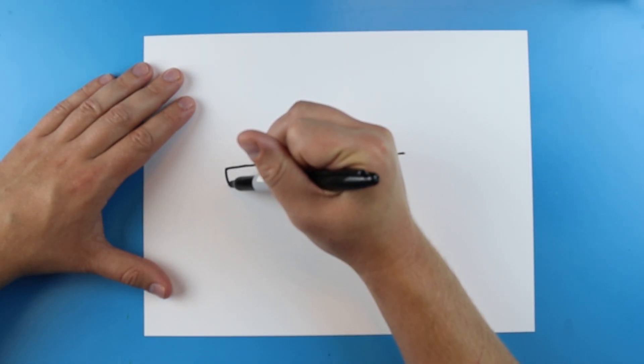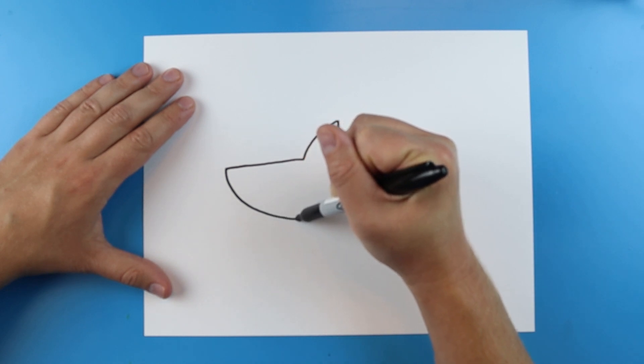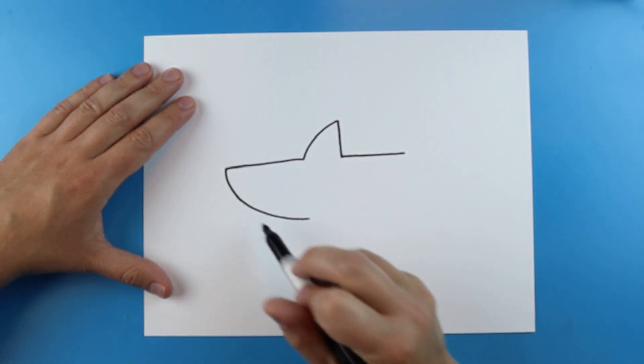Now, starting here, you're just going to curve a line that goes down to here. So just a nice big curve.